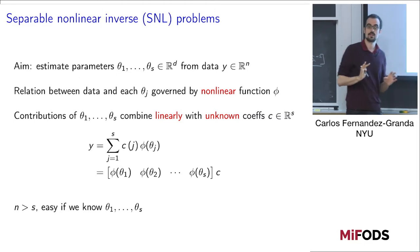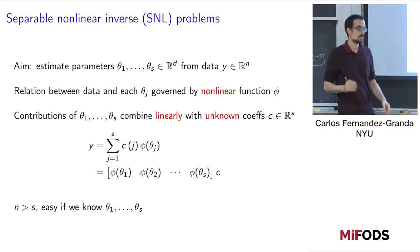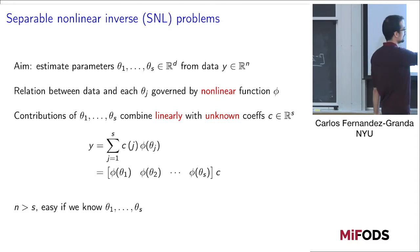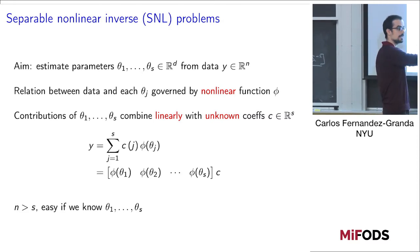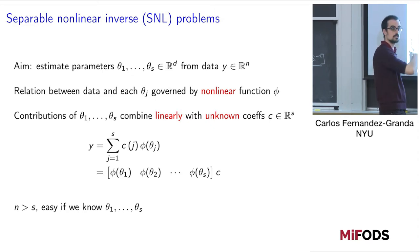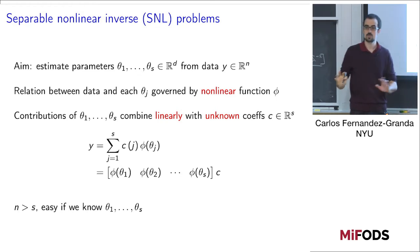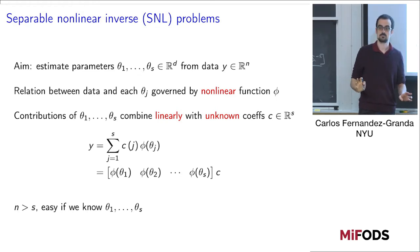Are there any questions about this setup? In particular, you can think of this as a matrix which depends on the parameters that we want to estimate, times this vector of coefficients, and that's what gives you the data. But we don't know these parameters.